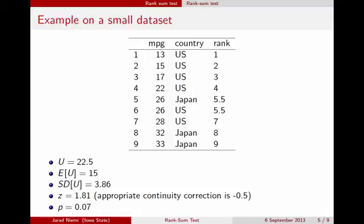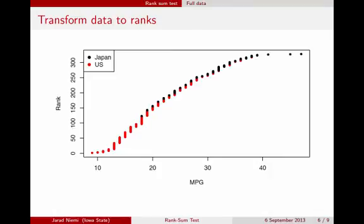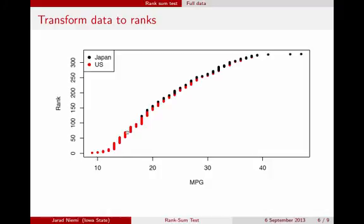Here's a quick visualization of what happens when we transform the full data into ranks. We've plotted all the data on the x-axis as miles per gallon, and on the y-axis the ranks, with observations color-coded as US or Japanese cars. The vertical lines show locations where there are ties — for example, all cars with a miles per gallon of 18 get the average of all their ranks, something like 110. There are lots of ties in this data set, but it's still pretty clear that there are lots of red observations at the lower ranks and lots of black observations at the higher ranks.